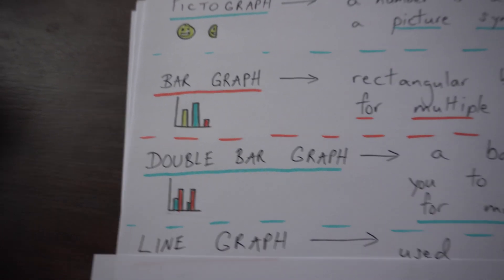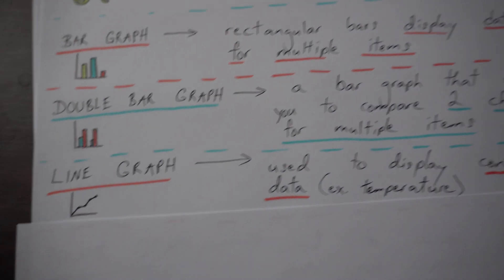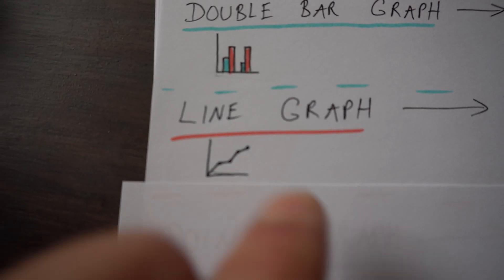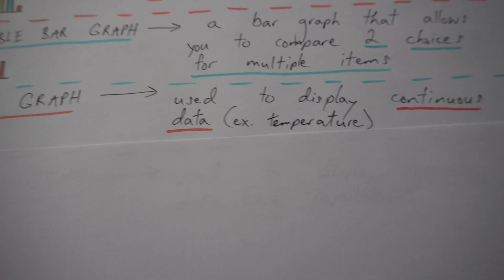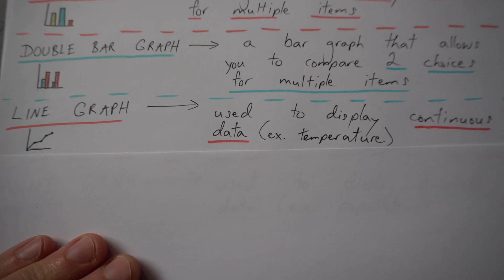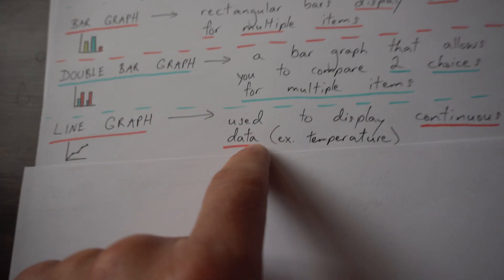Of course, hopefully I should say by now, you know a line graph. And that's when you are plotting points and you join those points to create a line because they're continuous data.